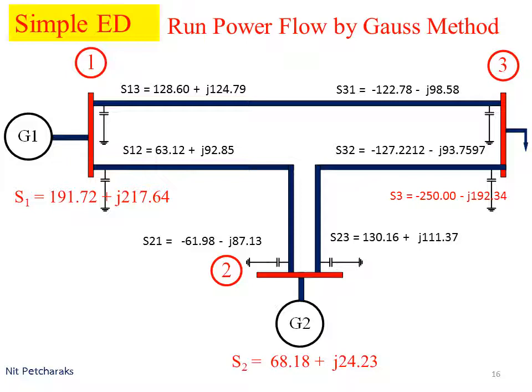Whereas generator G2 supplies power from bus 2 to bus 3. Notice that the difference of power in each line from the sending end to the receiving end is the total power loss of that line.